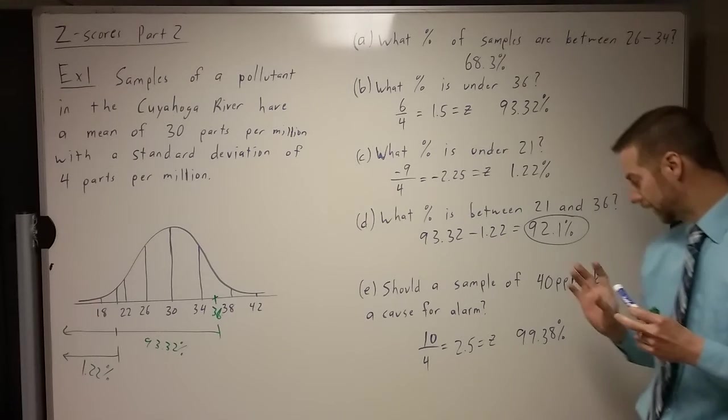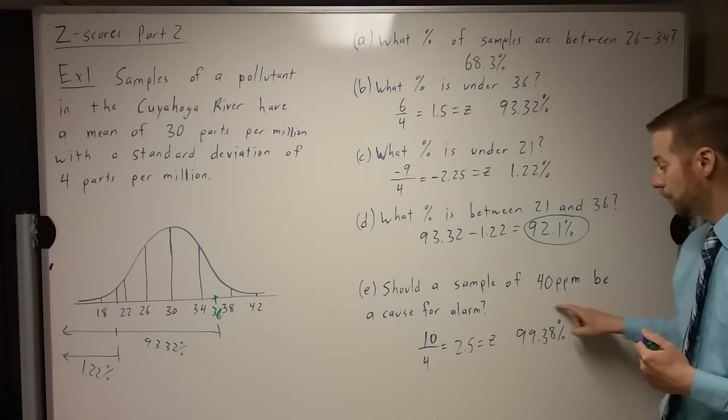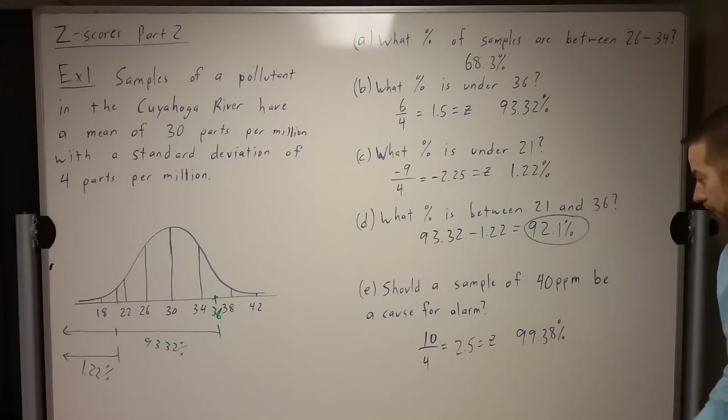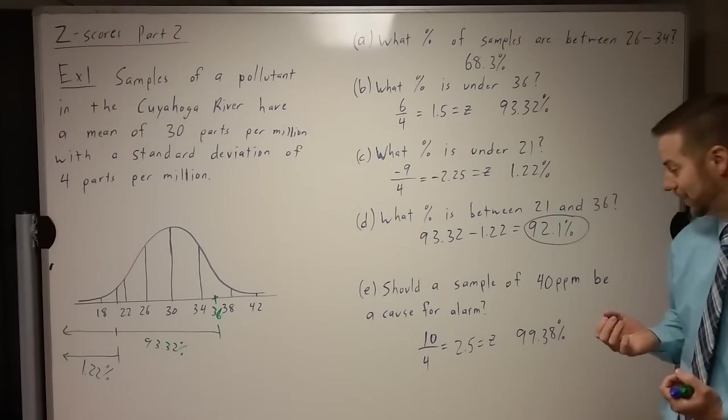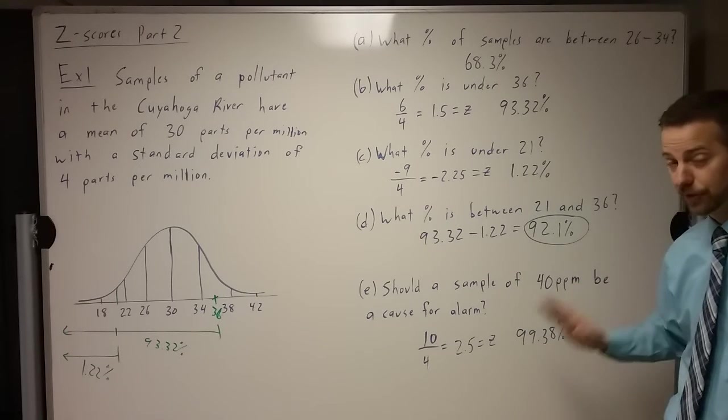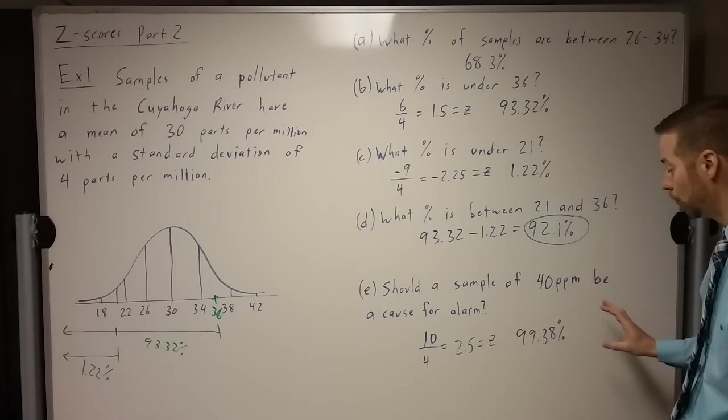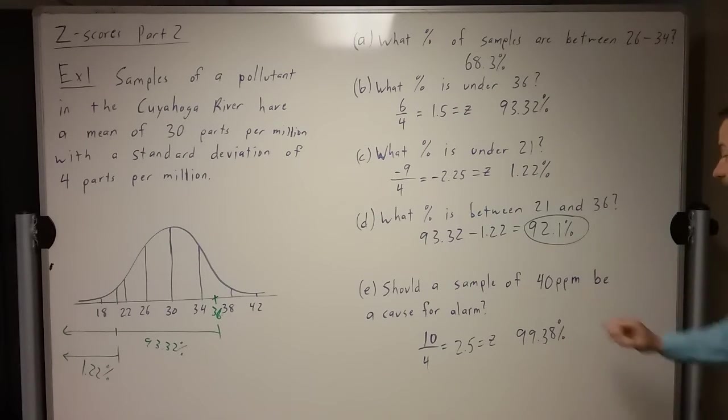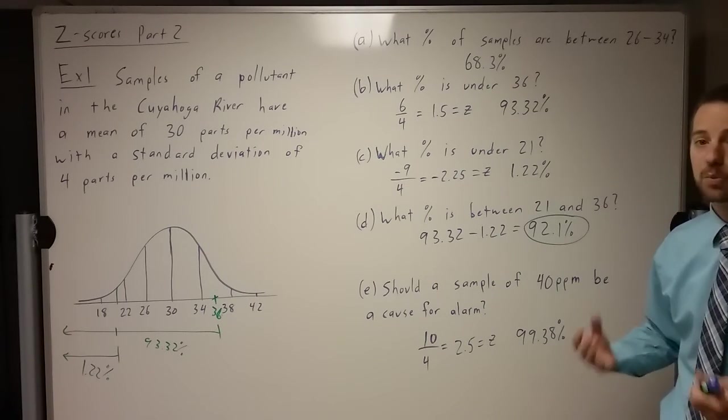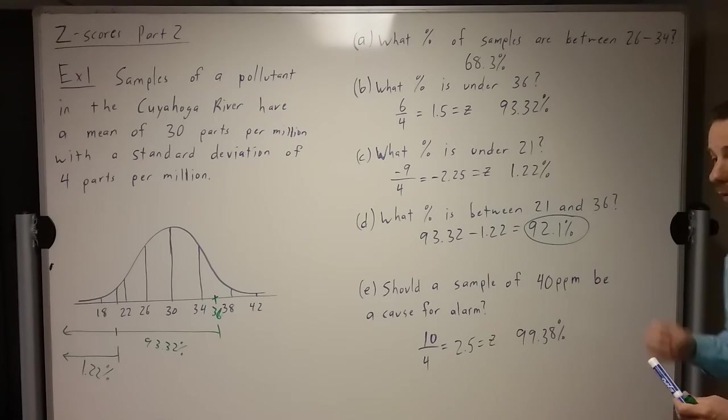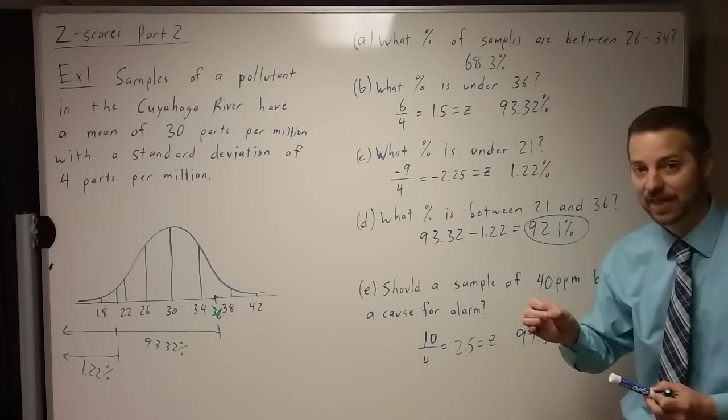Now, let's think about this for a second. When we get a sample, there's a 99.38% chance that it's lower than 40. So is a sample of 40 parts per million high enough to be rare? Yes, it is. There's a less than 1% chance that it's 40 or higher. Does that make sense how I got that? Just 100 minus this number. So there's really only like a 0.6, approximately, chance that you have 40 parts per million or higher. And so should this be a cause for alarm? Probably. Because there's a less than 1% chance that the sample should be that high using that mean and that standard deviation.